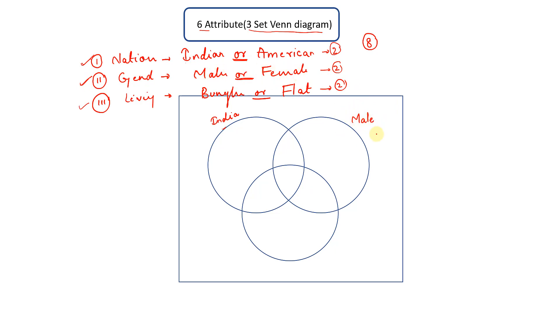And this circle, I can choose either of bungalow or flat. I'm choosing flat. Now what are the regions? Now let's name the region a, b, c, d, e, f, g, and h.